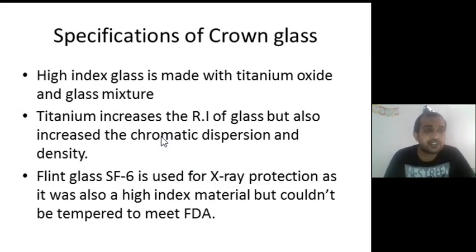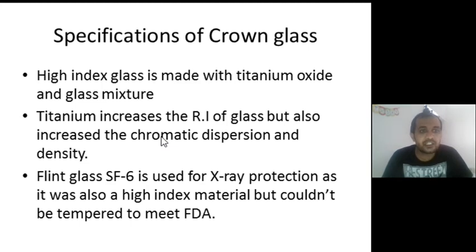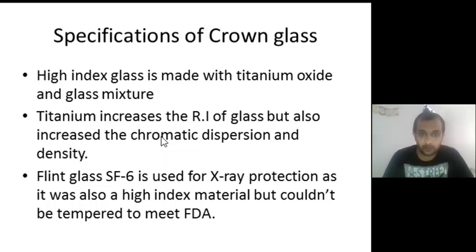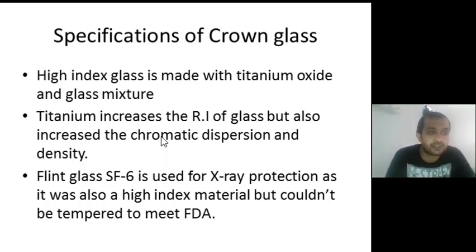High index glass is made with a titanium oxide and glass mixture. Titanium increases the refractive index of glass but also increases the chromatic dispersion and density — this is a big disadvantage. Crown glass is generally available till 1.80 refractive index, but simultaneously titanium is going to increase chromatic dispersion. Flint glass SF6 is used for x-ray protection as it was also a high index material but could not be tempered to meet FDA parameters.